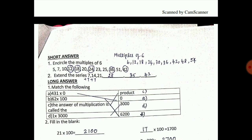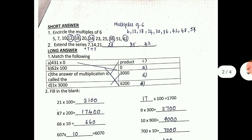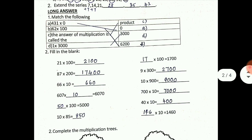6, 12 - one into three thousand is again three thousand. Filling the blanks: I have written the answers, you can just check. First one is 2100, second one is 17400, third one 660, fourth one - 7 into 10. Fifth one: 50 into 100; 10 into 85 is 850; 17 into 100 is 1700; 9 into 300 is 2700; 10 into 900 is 9000; 700 into 10 is 700; 40 into 10 is 400; 146 into 10 is 1460.